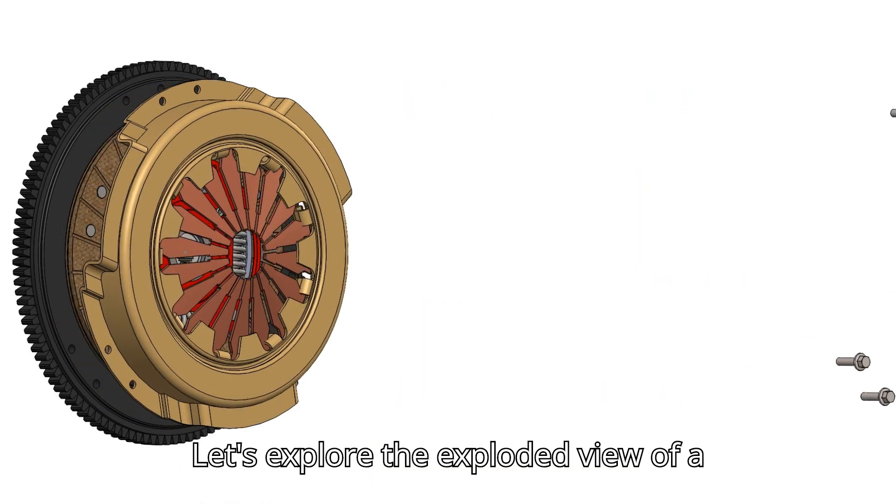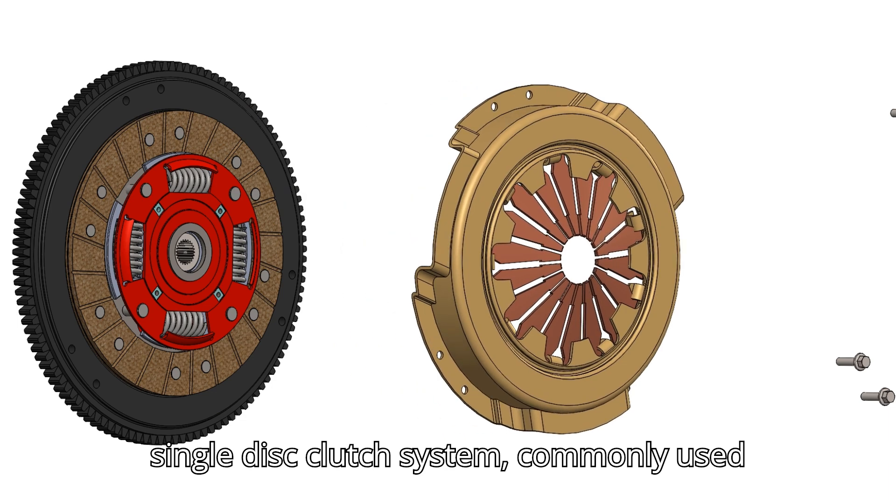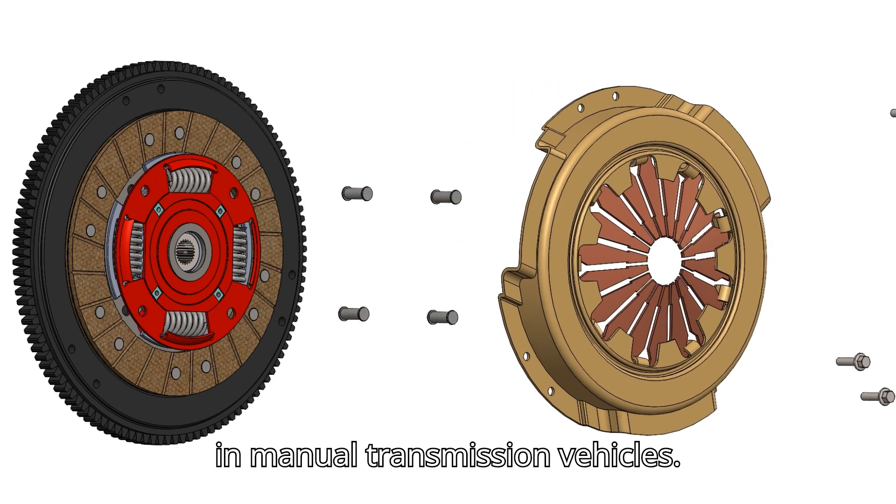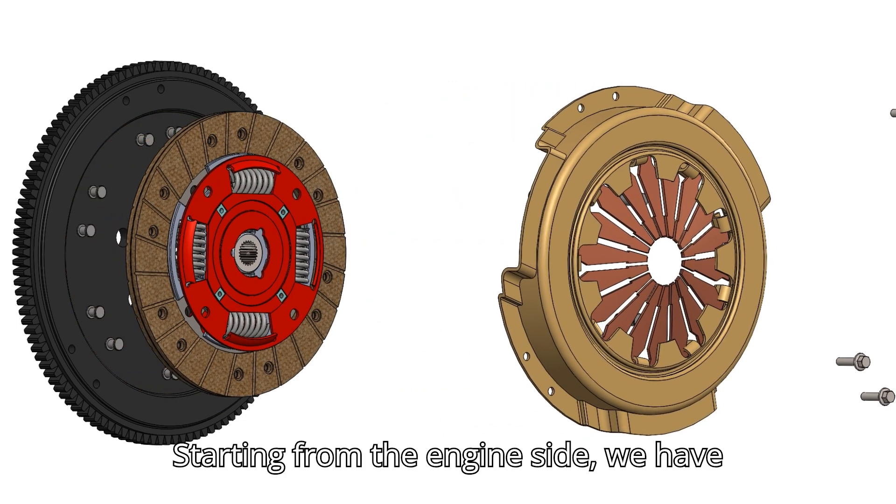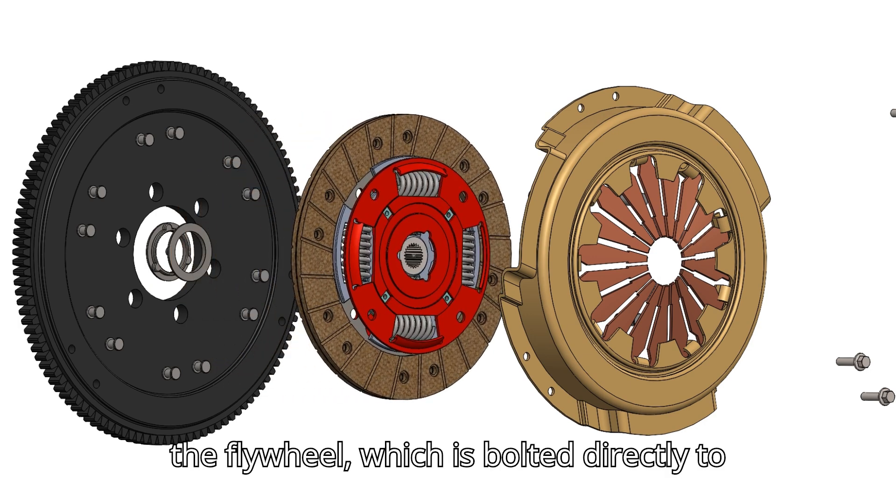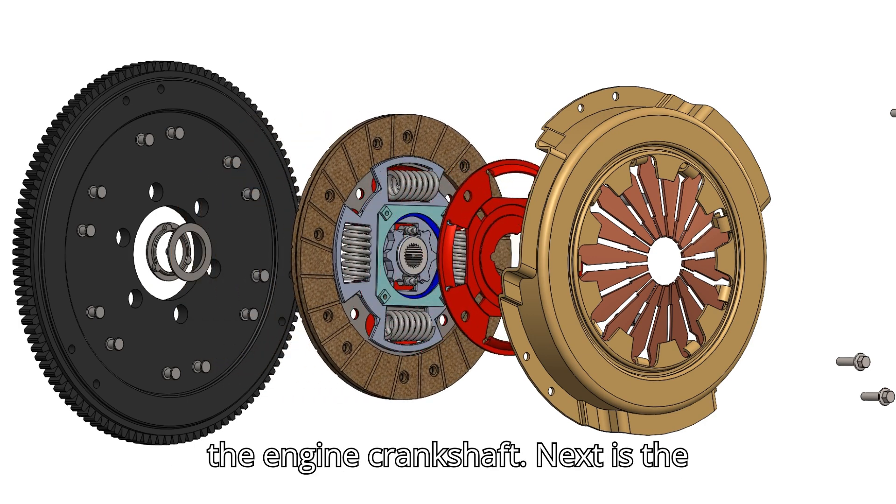Let's explore the exploded view of a single-disc clutch system commonly used in manual transmission vehicles. Starting from the engine side, we have the flywheel, which is bolted directly to the engine crankshaft.